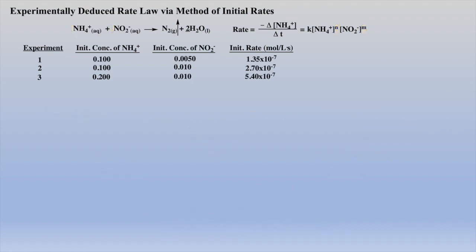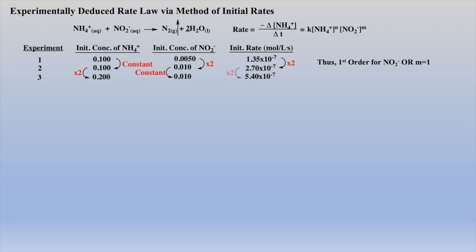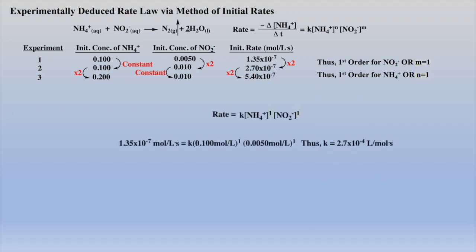An alternative and much easier way to deduce order for each reactant is to simply inspect the data table. When the concentration of ammonium is constant and the concentration of nitrite doubles, the rate also doubles, which means first order with respect to nitrite. Next, when nitrite is constant and ammonium is doubled, the rate also doubles, which means first order with respect to ammonium. The rate law can now be written and the rate constant deduced using the data from experiment one. Clearly, it is much easier to write the rate law by simply inspecting the data.